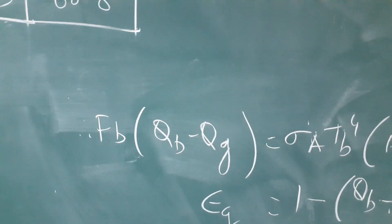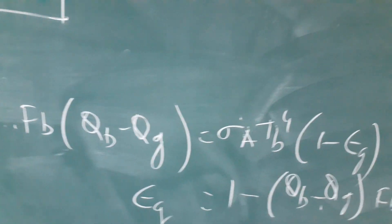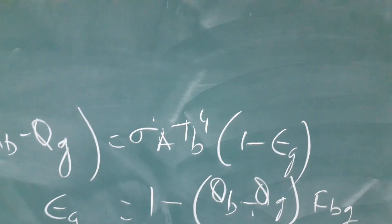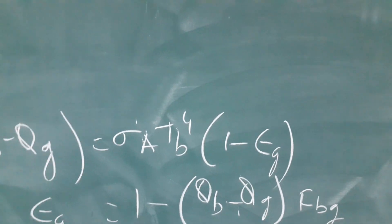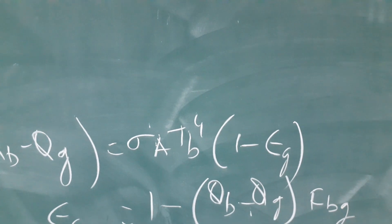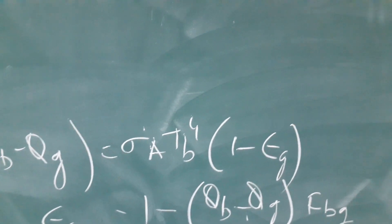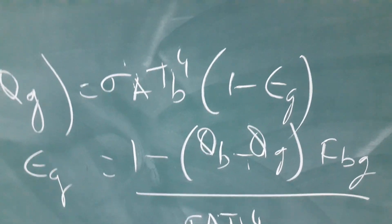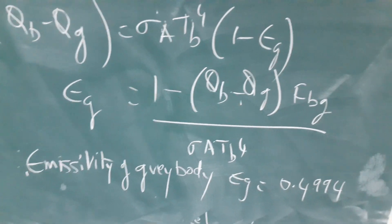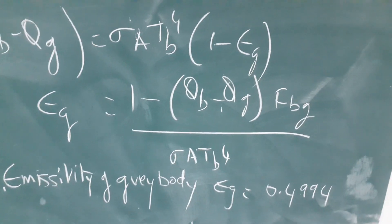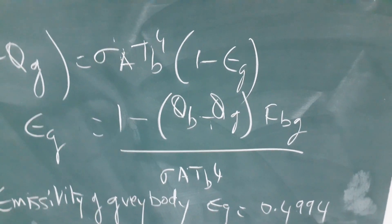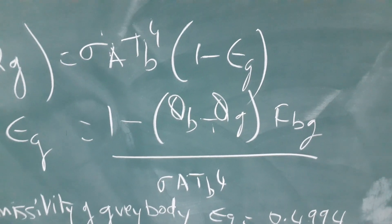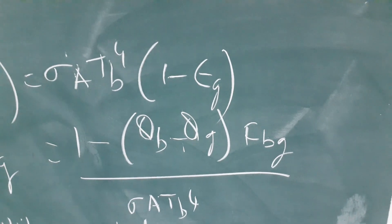Therefore, FB into QB minus QG, that is heat transfer of black body minus gray body, is equal to sigma A, that is Stefan-Boltzmann constant, into TB to the power of 4 into 1 minus epsilon, emissivity of gray body. So simplify, you will get emissivity of gray body is equal to 1 minus heat transfer of black body minus heat transfer of gray body into FBG.